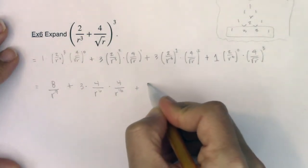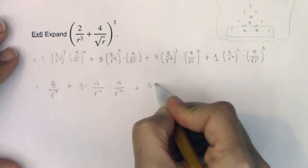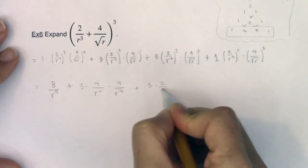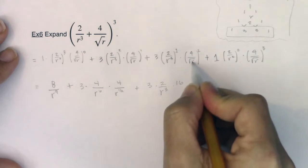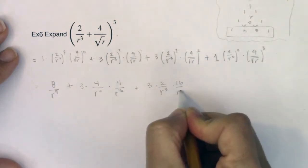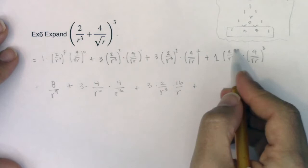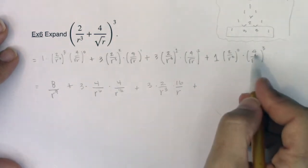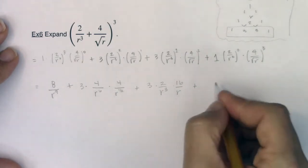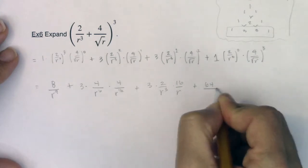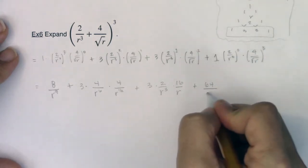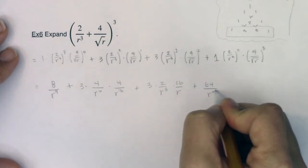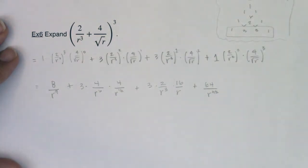Here we go. We've got 3. This is still going to be 2 over r cubed. 4 squared is 16. The square root of r squared is r. And then we've got 1. Anything raised to this 0 is 1. 4 cubed is 64. And then r, the square root of r cubed, that's like saying r to the 1 half cube, that's going to be r to the 3 halves.